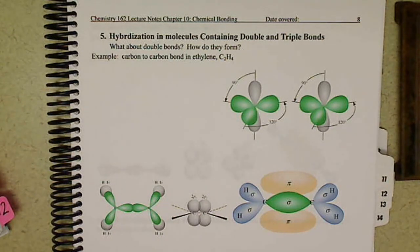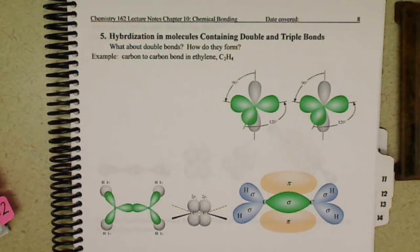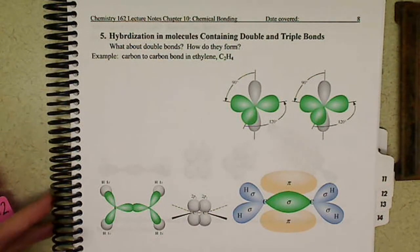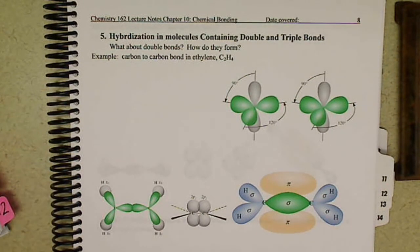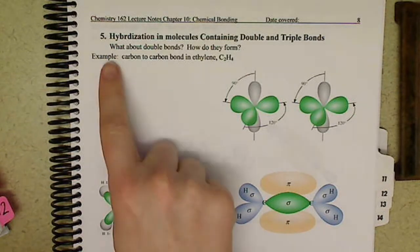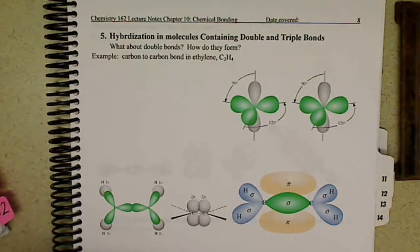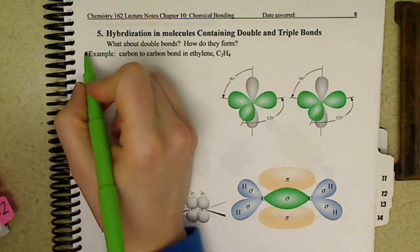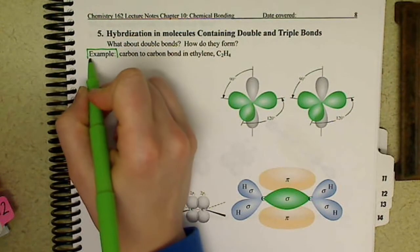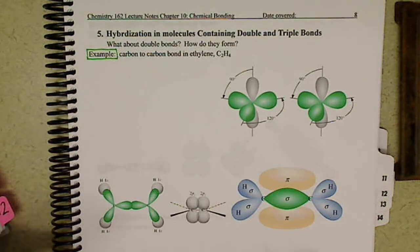Hybridization occurs in our single bonds. Our double and triple bonds don't form from hybridization — they actually form from unhybridized orbitals, so they remain and keep those atomic orbitals their same shape. In this video, we'll look at double bonds, and in the next video, we'll look at triple bonds.